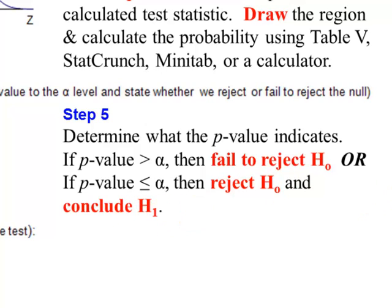If you can remember, if the P value is low, H of 0 must go. You would reject H of 0 and conclude the alternative.